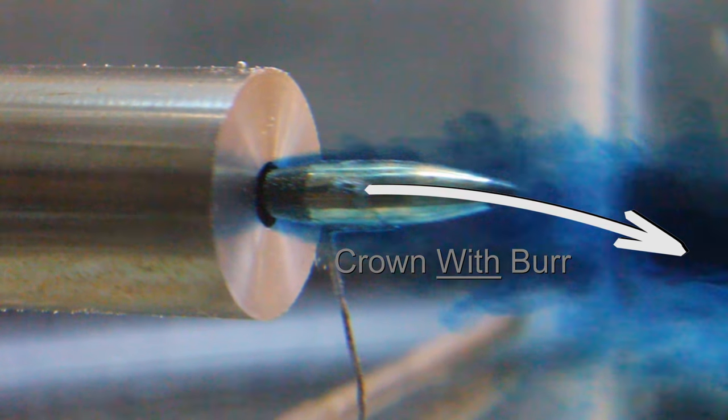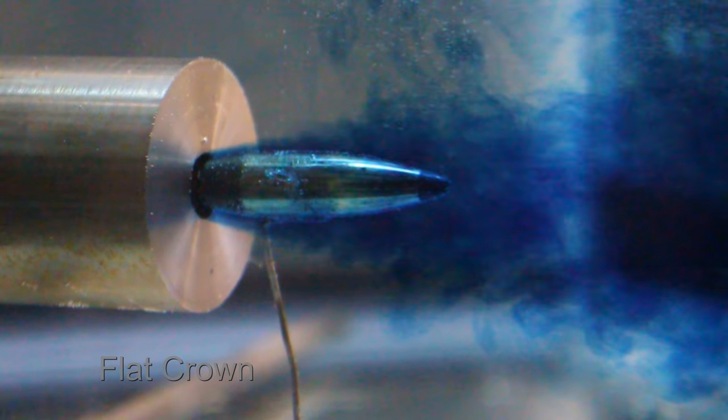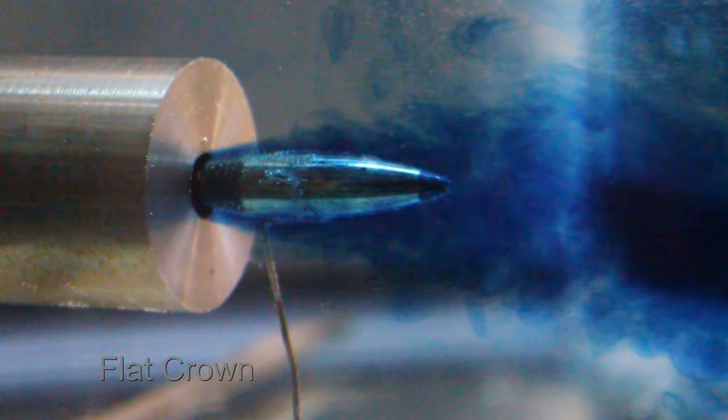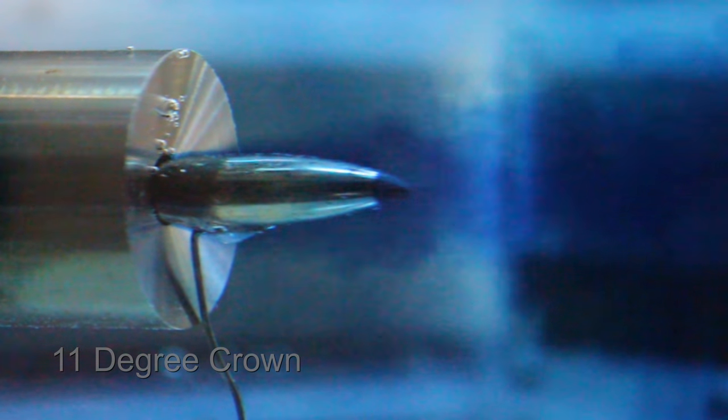In these clips I decided to play with food dye and a hunk of barrel in my kitchen. In the first clip is a barrel with a flat crown. Notice the gases are leaving the bore straight out. The second clip is with an 11 degree crown. Notice the difference?